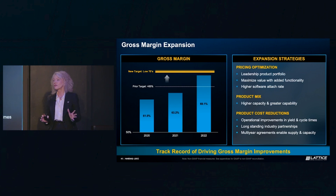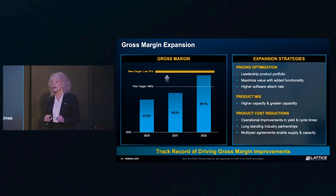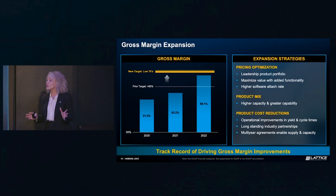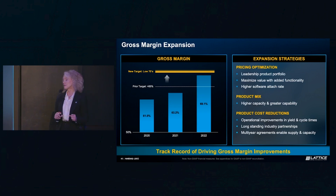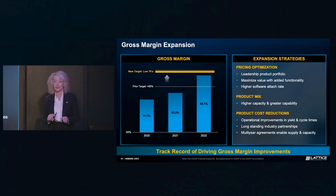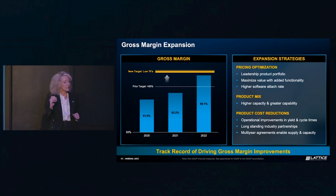Looking at our leadership product portfolio — with six devices on our Nexus platform and the Avant launch at the end of 2022 — we put strategic analytics in place to ensure we could price products that add tremendous functionality to our customers. We're now entering our fifth year of gross margin expansion strategy, and pricing optimization has become part of our DNA. The second area, product mix: the strategic market shift towards our core segments of comms and compute and industrial and automotive — multi-year revenue streams with higher capability and greater capacity — all of that drives mix improvement. The third area, product cost reductions: working closely with our suppliers to generate operational improvements in yield times and cycle times, also benefiting from strong multi-year supplier relationships. When you put all of this together, you have durable gross margins. We are raising our gross margin target to the low 70s.